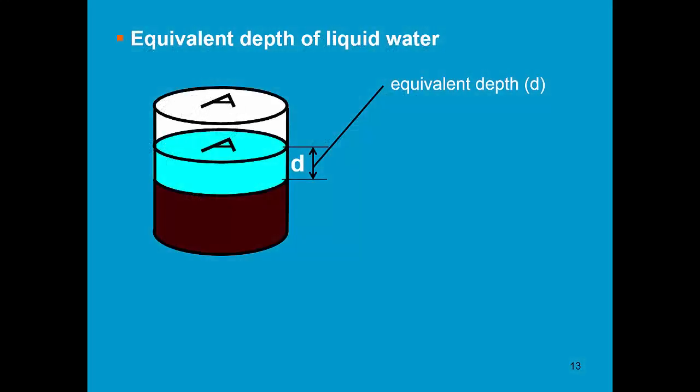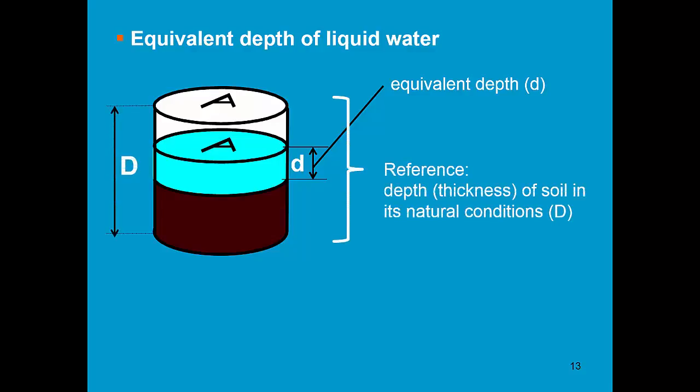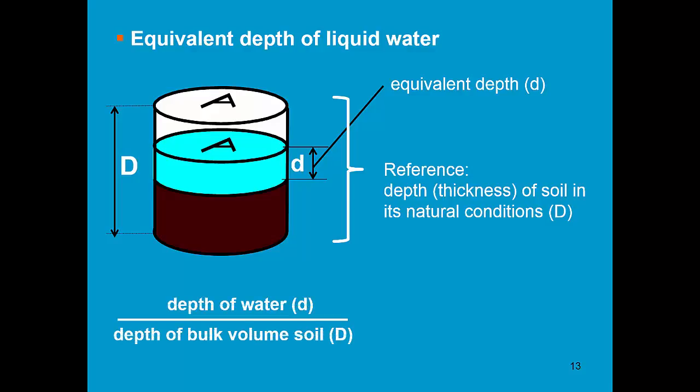To express the soil water content as an equivalent depth of liquid water, the thickness of the water layer is expressed as a fraction of the thickness of the soil layer from which the water was extracted. The equivalent depth of water is the ratio of the depth of the water to the depth of the bulk soil volume. It is expressed in meters of water per meter of soil. Often the depth of the water is expressed in millimeters, so if we multiply by 1,000 we obtain millimeters of water per meter of soil.